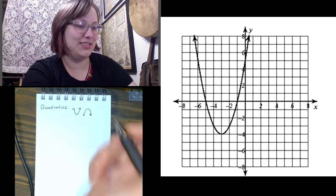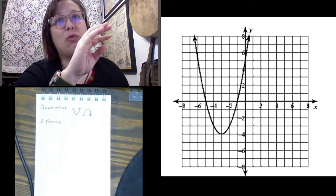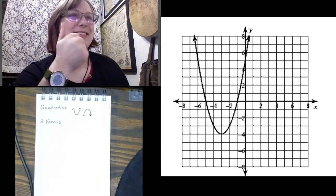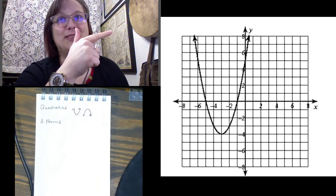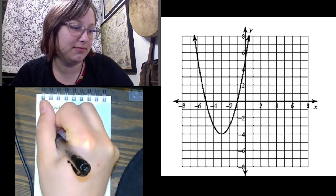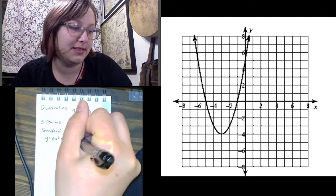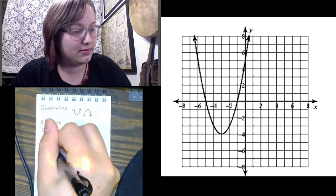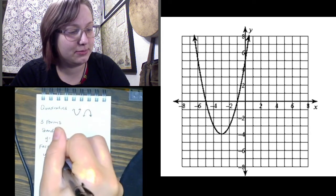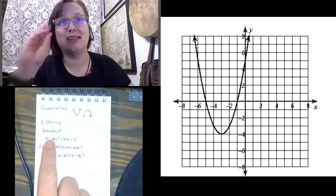Just as a reminder, there are three forms of the quadratic equation — kind of like linear functions where you had y equals mx plus b, but also point-slope and standard form. Quadratics have the same thing. Our three forms are: standard form, which is y equals ax squared plus bx plus c; factored form — also called intercept form, depending on your teacher; and vertex form. This 'a' is the same exact number across all three forms the entire time.